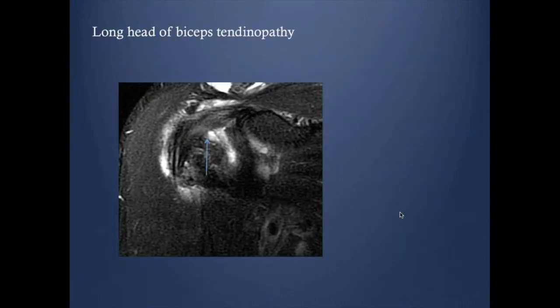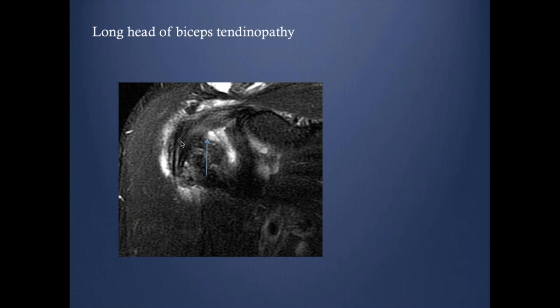What are the potential pathologies? Tendinopathy is fairly common. You can see the thickening of the long head of biceps. As you see here, this is a coronal image — this is the superior labrum, this is the supraspinatus tendon. The biceps tendon is very challenging sometimes.